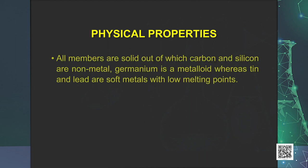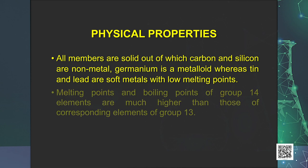Physical properties of group 14 show that all members are solid. Carbon and silicon are non-metals, germanium is a metalloid, whereas tin and lead are soft metals with low melting points. The melting points and boiling points of group 14 elements are much higher than those of corresponding elements of group 13.